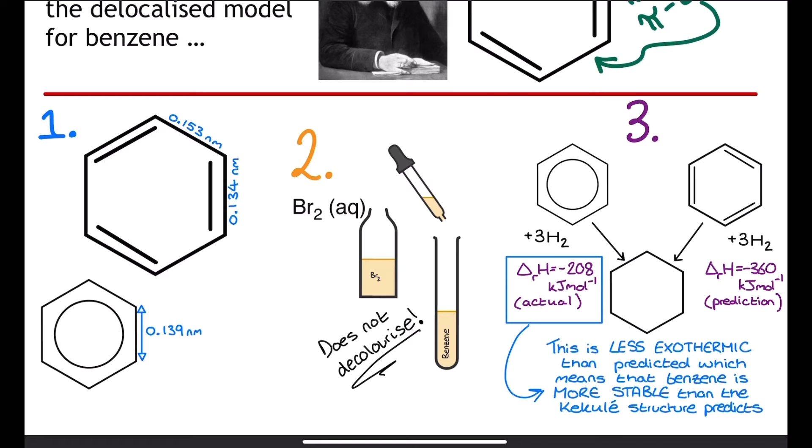Now based on Kekulé's suggestion, which is effectively cyclohexa-1,3,5-triene, the two extra carbon to carbon double bonds mean that the enthalpy change for benzene should in theory be predicted as negative 360 kilojoules per mole. But it isn't.